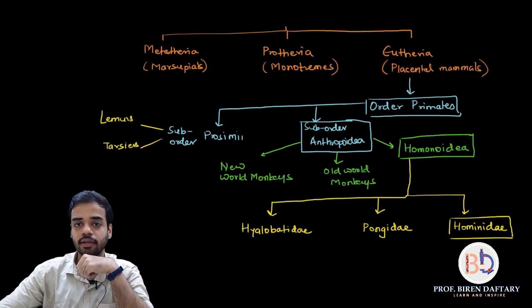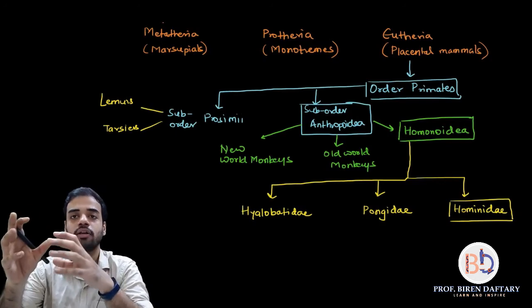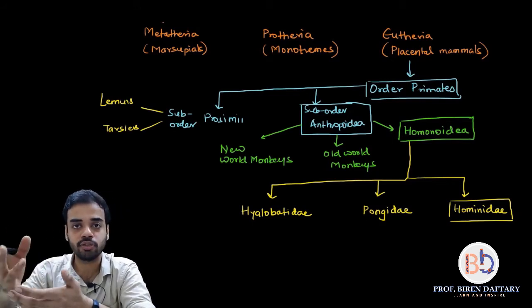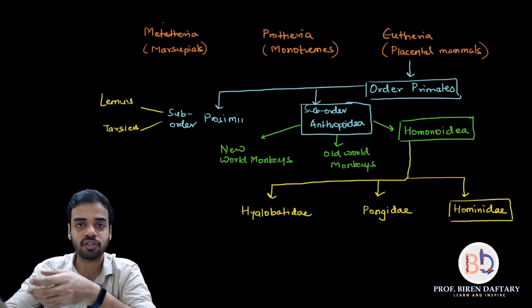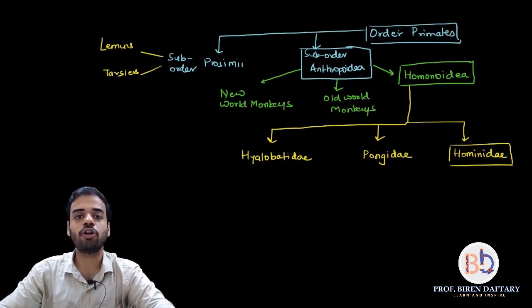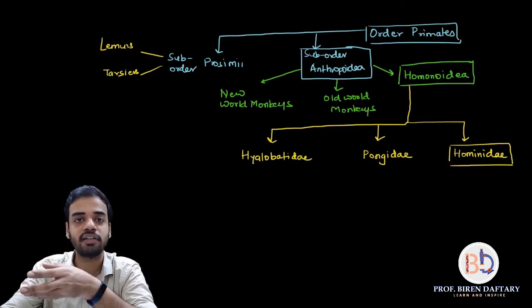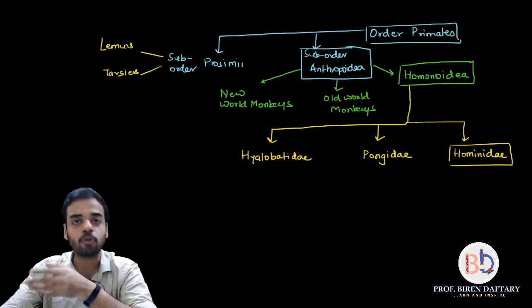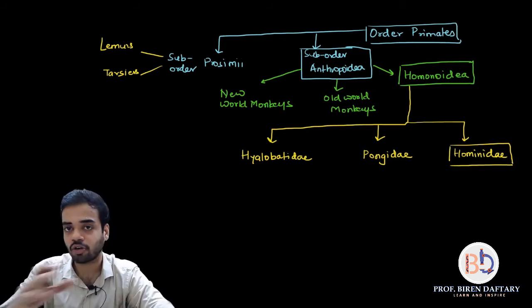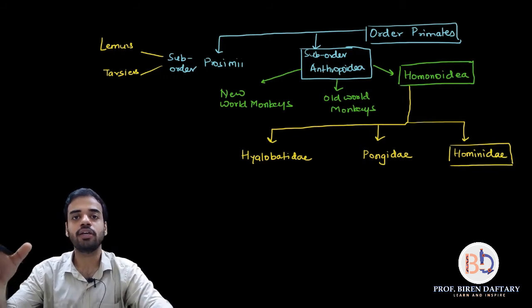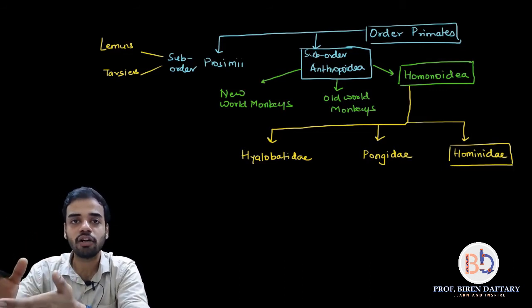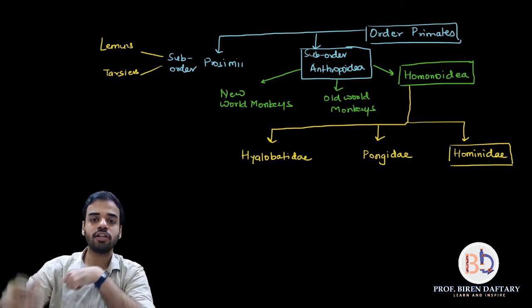To summarize the classification: Class Mammalia is divided into three subclasses — Metatheria, Protheria, Eutheria. Eutheria (placental mammals) is divided into many orders, one of which is Order Primates. Order Primates divides into Suborder Prosimi and Suborder Anthropoidea, which is very important.